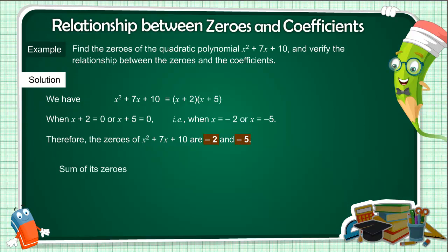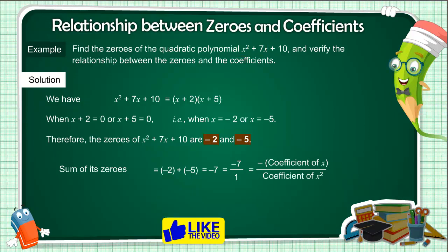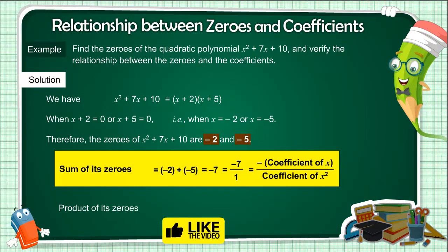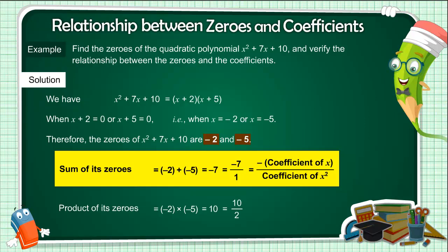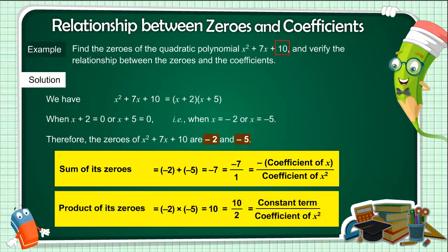Sum of its zeros equals minus 2 plus (minus 5), which equals minus 7, which equals minus 7 by 1 — that is, minus the coefficient of x upon the coefficient of x². Product of its zeros equals (minus 2)(minus 5), which equals 10, which equals 10 by 1 — that is, the constant term upon the coefficient of x².